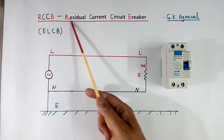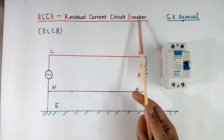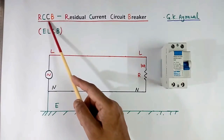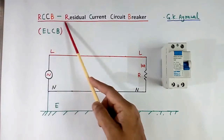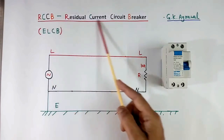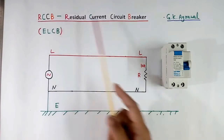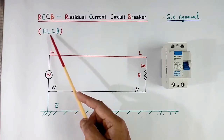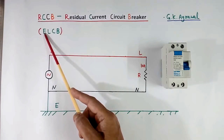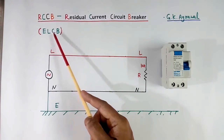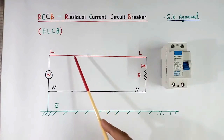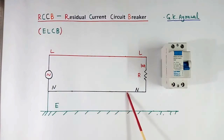RCCB stands for Residual Current Circuit Breaker. R means residual, C means current, C means circuit, B means breaker. This is also called ELCB — Earth Leakage Circuit Breaker.